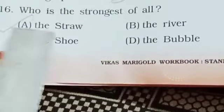16. Who is the strongest of all? A. The straw, B. The river, C. The shoe, D. The bubble. Correct answer, A, the straw.